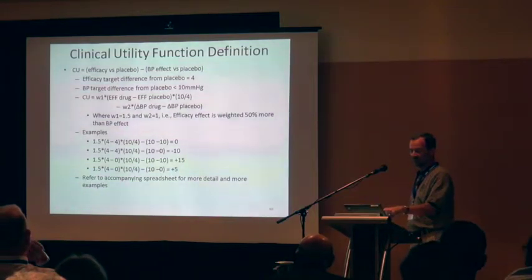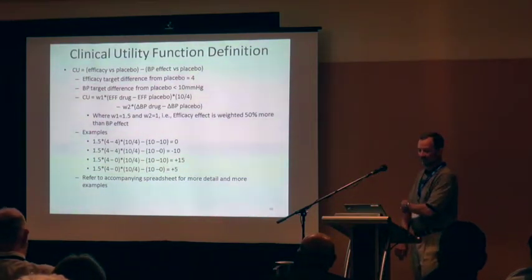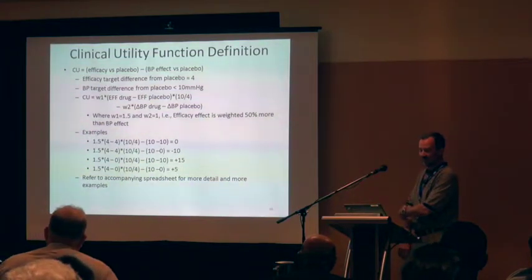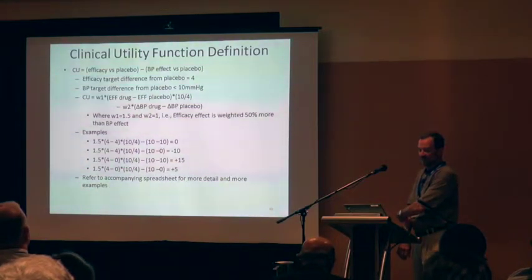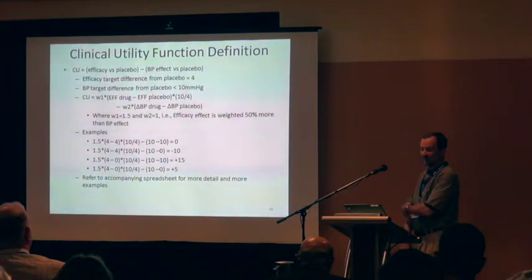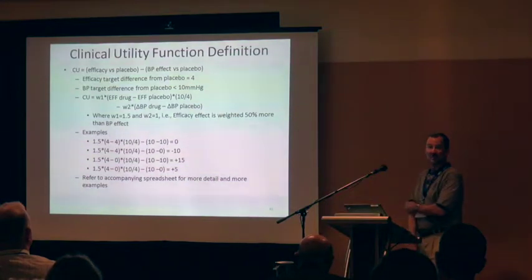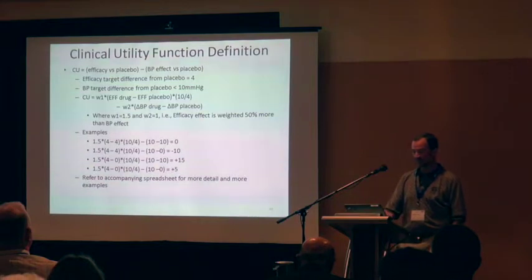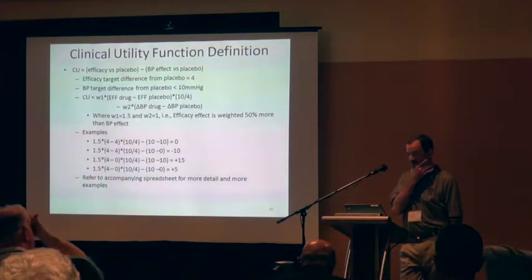When there's no efficacy and no blood pressure effect, we get a utility of zero. When there's a ten-unit blood pressure effect, we get minus ten. When there's no blood pressure effect and four-unit efficacy, we get plus fifteen. When there's both, we get plus five — because efficacy is weighted more than tolerability. If the blood pressure effect gets larger than ten, that will have a detrimental effect on clinical utility even in the face of efficacy.